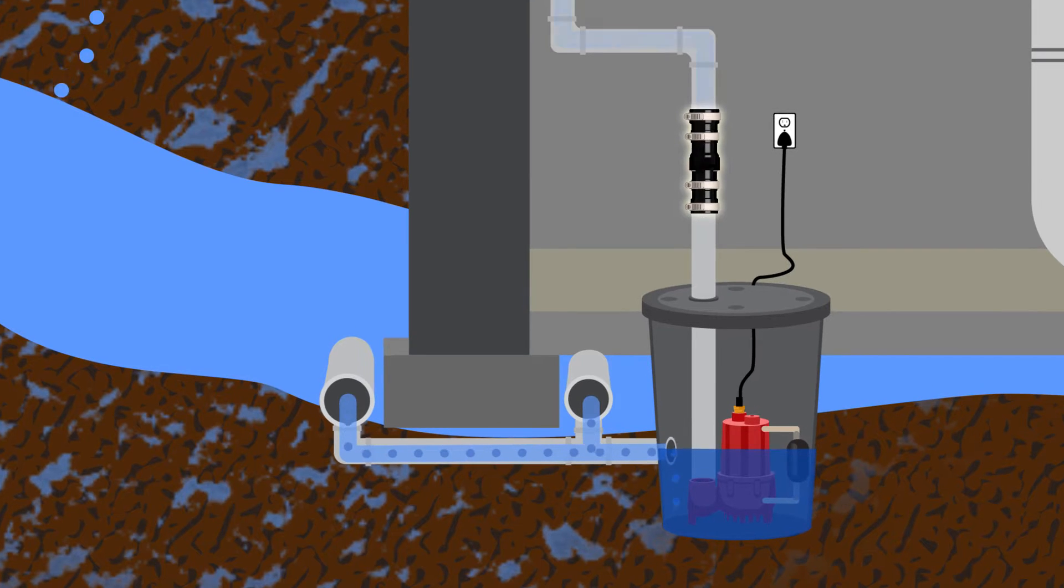Sump pumps use a hinge or flapper style check valve. When the pump is active, pressure pushes the valve open letting water flow through the pipes.